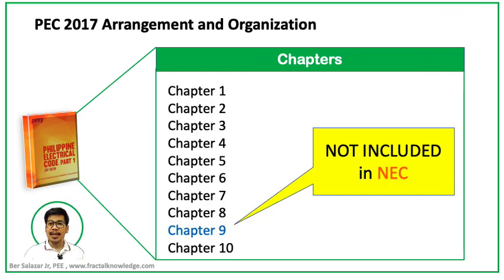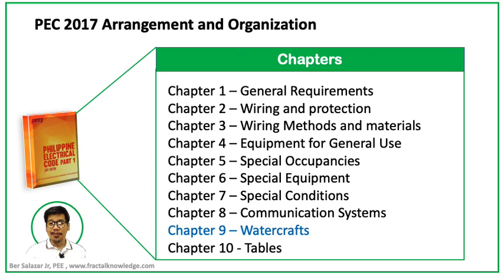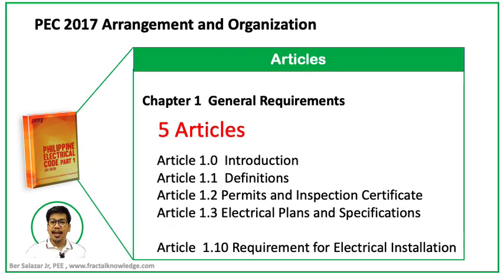There are 10 chapters in PEC 2017. Chapter 9 covers watercraft — unlike NEC, which only includes floating buildings and not ships, boats, or yachts. That means there are areas for electrical engineers in the Philippines to learn more about electrical design and provisions for watercraft. The 10 chapters are: Chapter 1 – General Requirements, 2 – Wiring and Protection, 3 – Wiring Methods and Materials, 4 – Equipment for General Use, 5 – Special Occupancies, 6 – Special Equipment, 7 – Special Conditions, 8 – Communication Systems, 9 – Watercraft, and 10 – Tables.